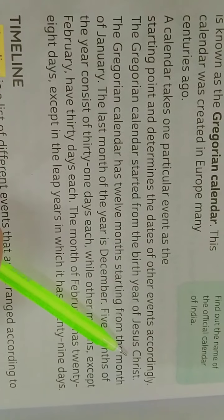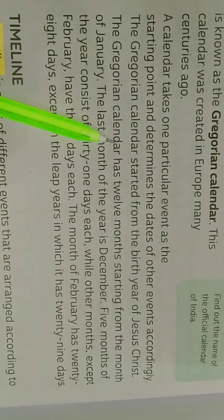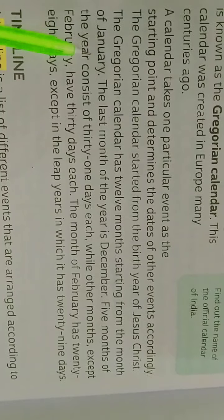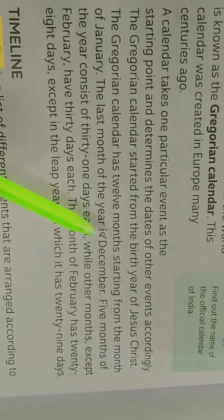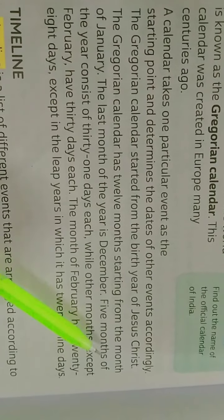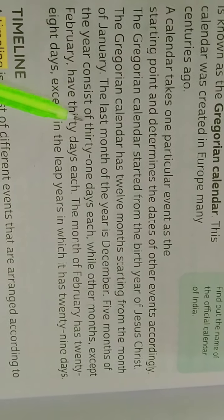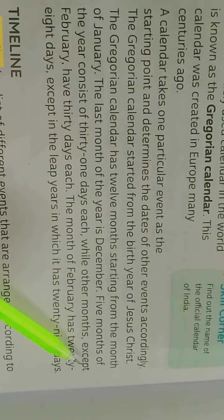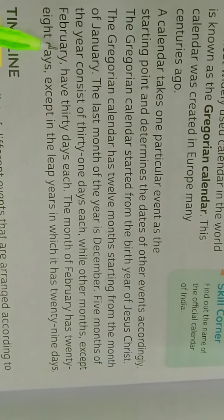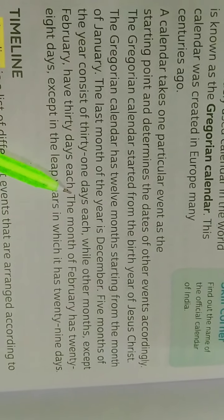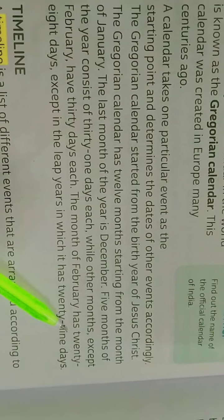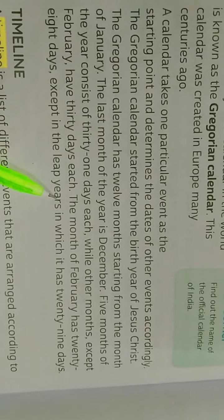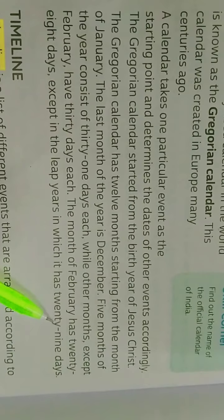The Gregorian calendar started from the birth year of Jesus Christ. The Gregorian calendar has 12 months, starting from the month of January. The last month of the year is December. Five months of the year consist of 31 days each, while other months except February have 30 days each.